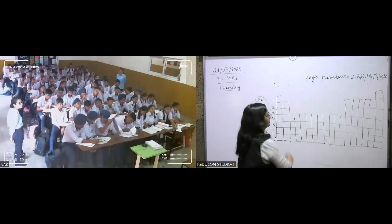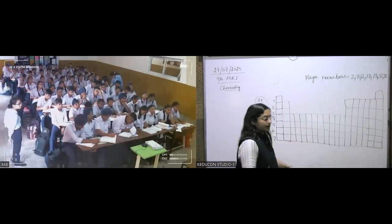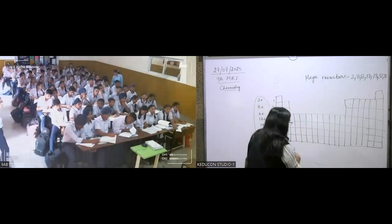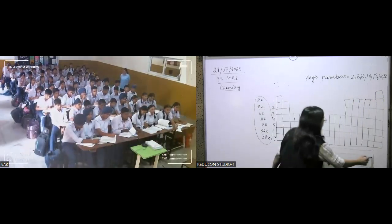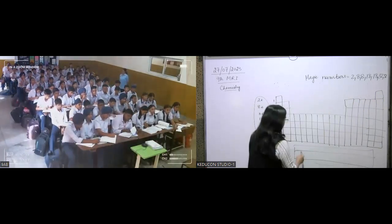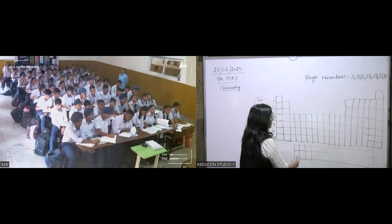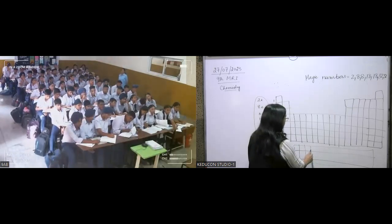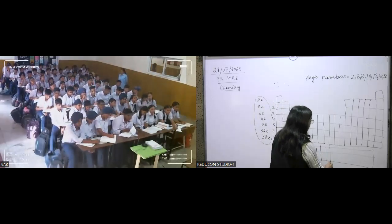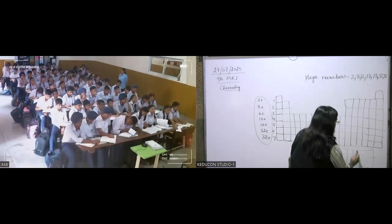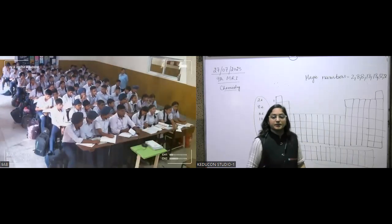This is your periodic table. Here at the bottom there is a separate block — two lines — with 14 elements in each line.